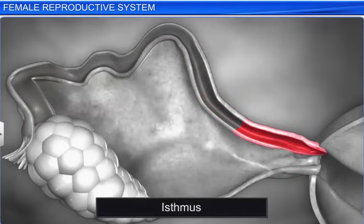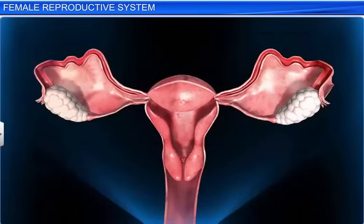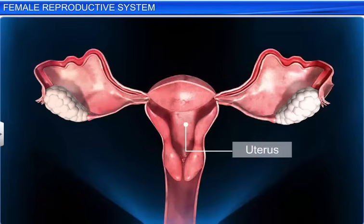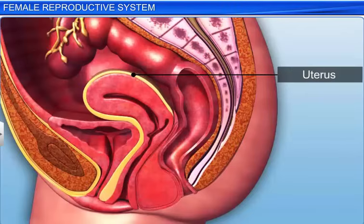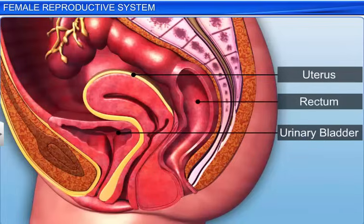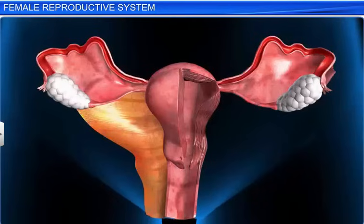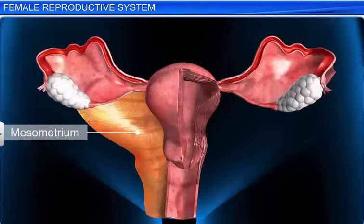The isthmus is a narrow and straight cavity, and it joins the uterus. The uterus is a hollow, pear-shaped, muscular organ and is highly distensible. It is situated in the pelvic cavity between the urinary bladder and the rectum. It is also known as the womb. It is supported by ligaments attached to the pelvic wall, known as mesometrium.